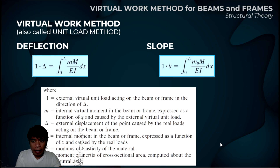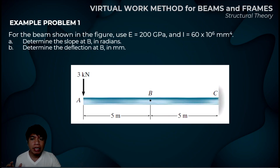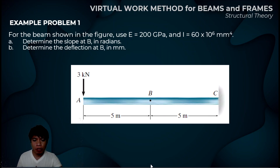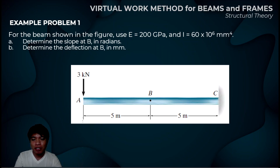That's it for this discussion. To understand the application of these two formulas, we have example problem number one — a cantilever beam where the slope at point B and deflection at point B are asked. I'll cut the video here so the solution is easier to review. In the next video, we will solve problem number one. Don't forget to subscribe!